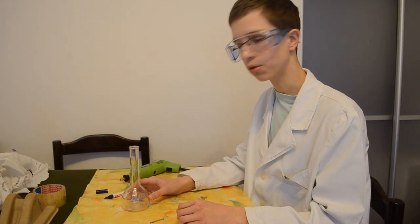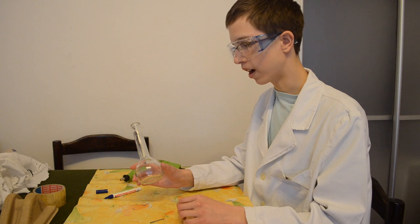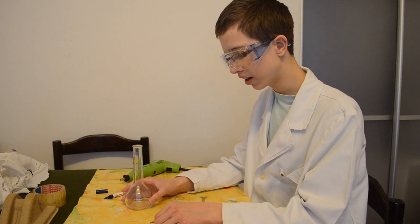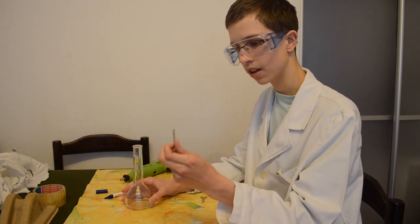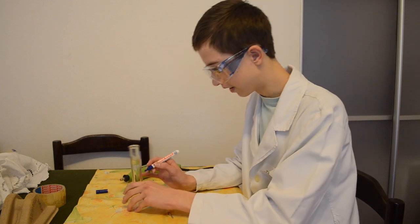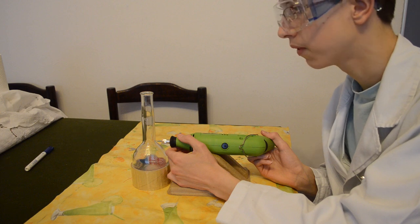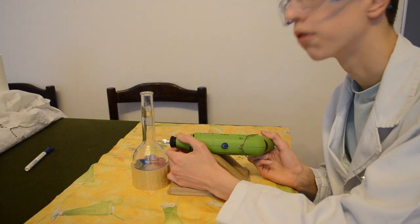As the first step we need to drill one hole in this bottle for anode. For that drilling we'll use this diamond coated grinder. Now we are going to drill the hole. Tommy, please can you help me hold the bottle for me.